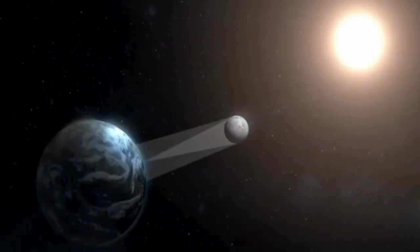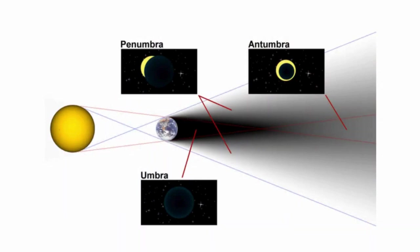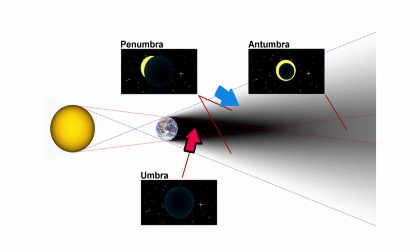When the moon or earth is blocking the sun, three types of shadows are created: the umbra, penumbra, and the antumbra. The umbra is the shadow's dark core. The penumbra is the less dark outer part of the shadow surrounding the dark core. And the antumbra is the lighter area of a shadow that appears beyond the umbra.